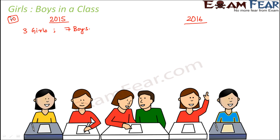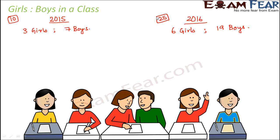Now when the same report was fetched in 2016, people decided that the literacy rate of girls should also increase and girls should be encouraged to come to school, so they wanted more girls to take admission. In 2016, it was recorded that there were six girls in the class — an increase from three to six — and 19 boys.